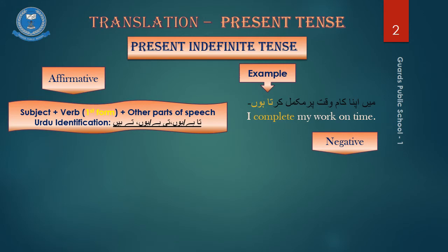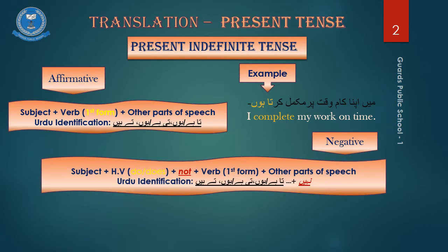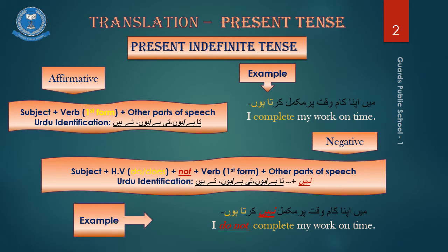Likewise, if an Urdu sentence ends at these identifiers and it also has a word of negation nahi in it, we know that it is a sentence of the present indefinite tense in the negative form. For example, may apna kaam vaqt par mukamil nahi karta hoon. I do not complete my work on time.